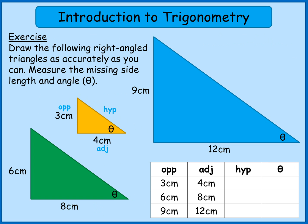Here's our first exercise. I want you to draw those right-angled triangles as accurately as you can on your piece of paper, then measure the missing side length — the hypotenuse — in each case, and the missing angle. You might want to pause the video while you do this.